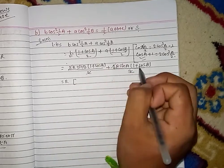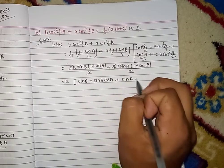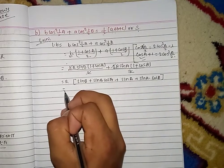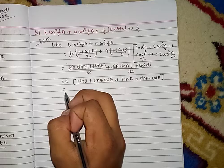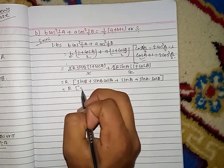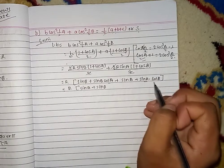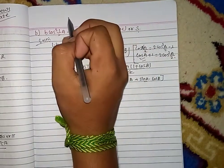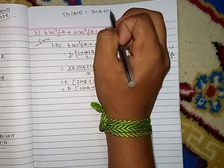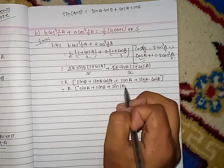So sign B plus sign B·cos A plus sign A plus sign A·cos B. Then combining: sin A·cos B + cos A·sin B = sin(A+B).